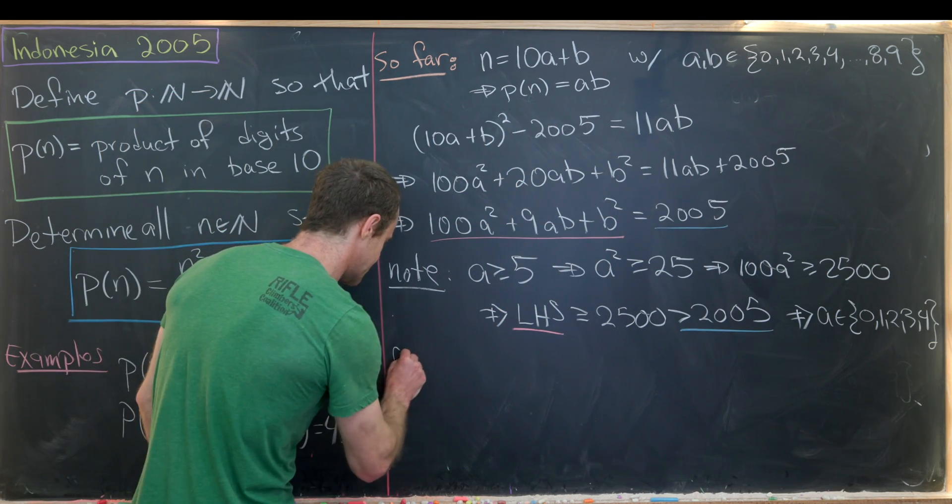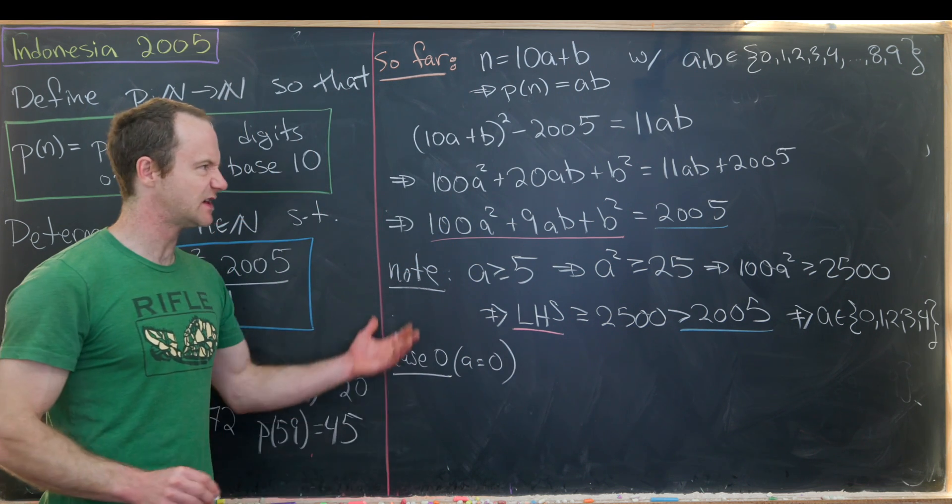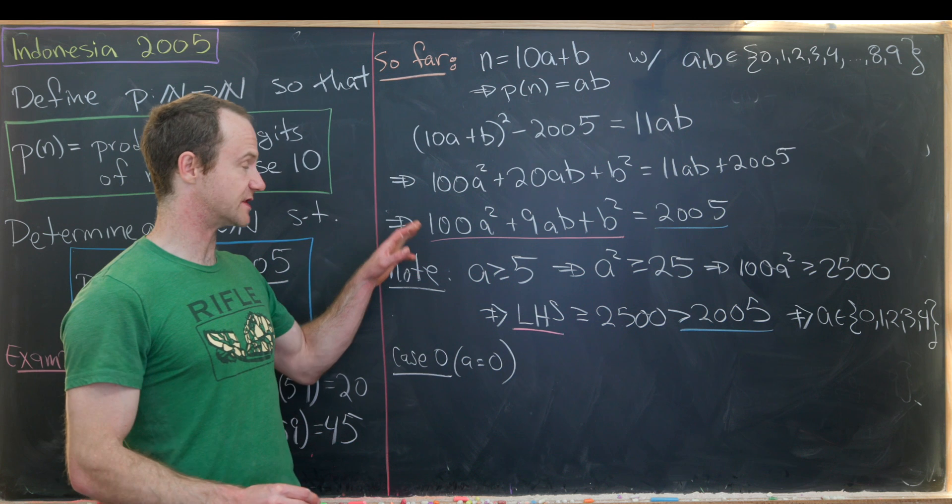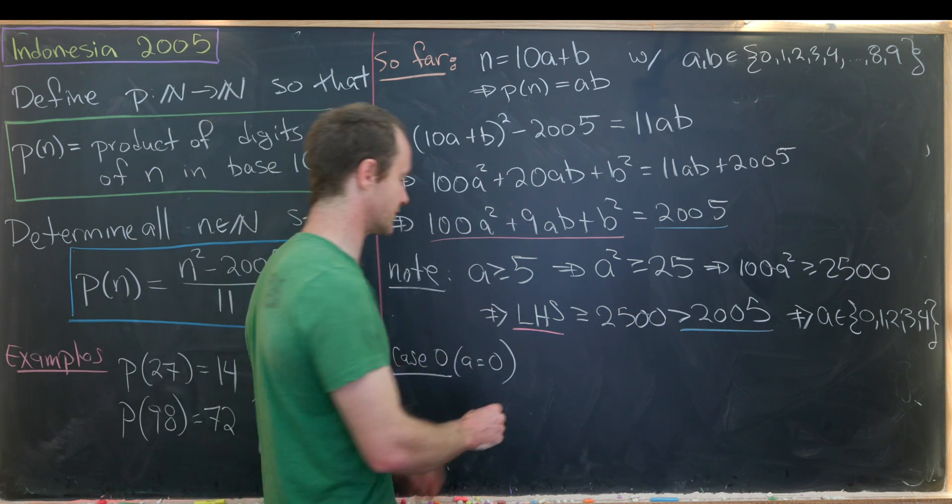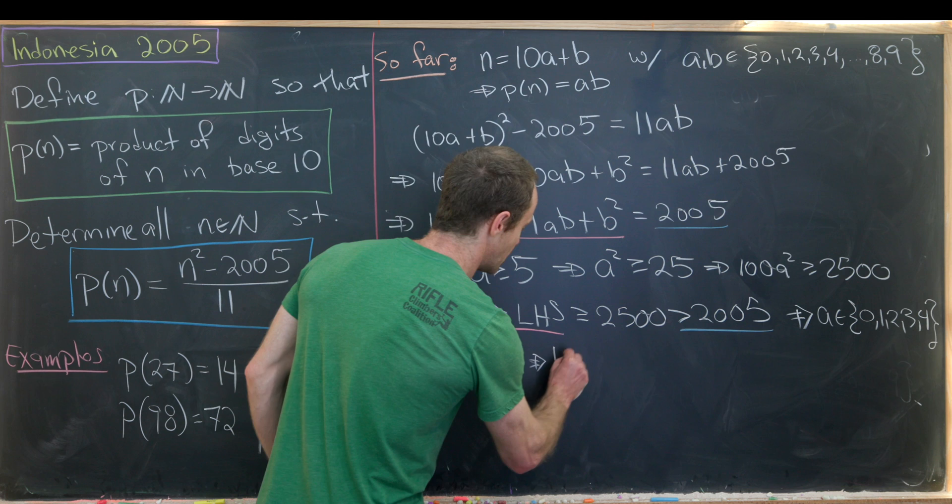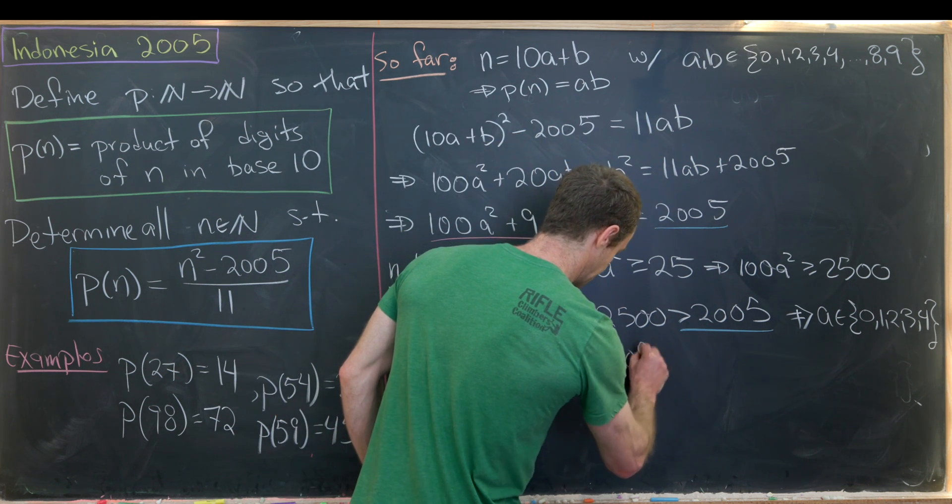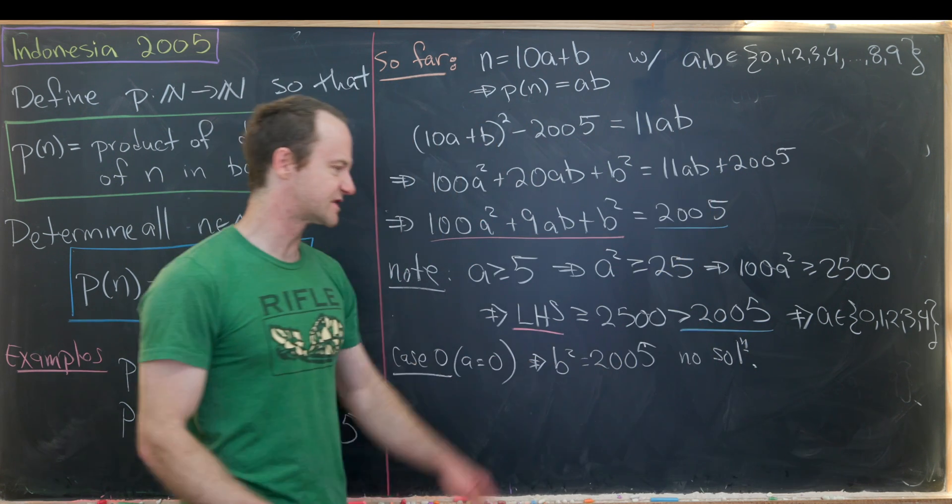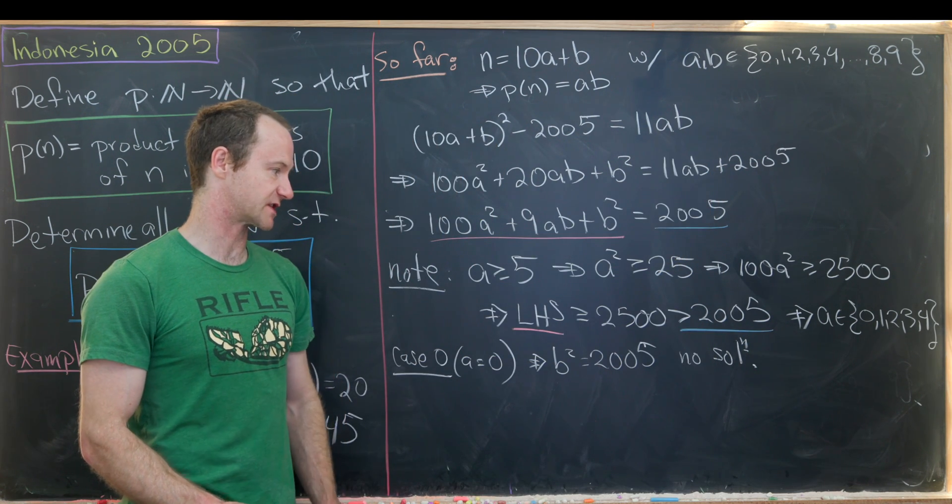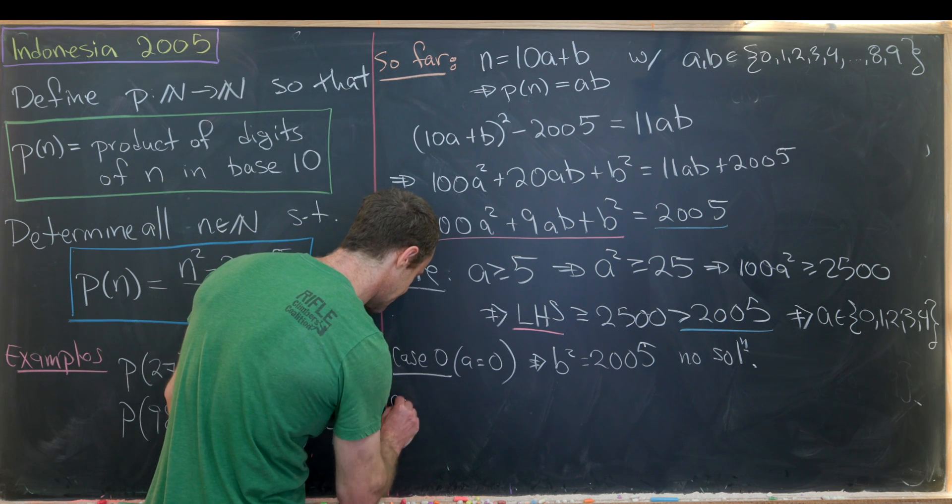And from here it's just like casework to finish it off. So let's maybe say case 0 will be the case when a is equal to 0 and see if this works out. Let's notice if we get a equals 0 then this thing zeroes out, this thing zeroes out and we end up with the equation b squared equals 2005. But this in fact has no solution. That's because 2005 is not a perfect square. You can check that pretty easily.